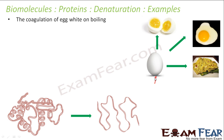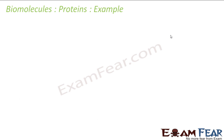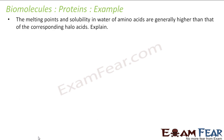An example of protein denaturation is the coagulation of egg white on boiling. The egg has a semi-solid or liquid kind of substance inside, but when you boil it you get a solid — because the protein inside the egg denatures and coagulates. Another example is the curdling of milk.